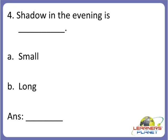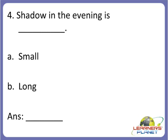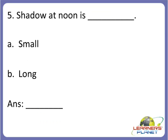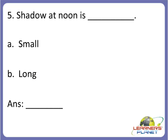Now the next one — this is also very simple. Shadow in the evening is blank. Is the shadow formed in the evening small or long? Shadow formed in the evening is long, so D is the correct answer. Shadow at noon is blank — is the shadow formed at noon small or long? The shadow formed at noon is small, so A is the correct answer.